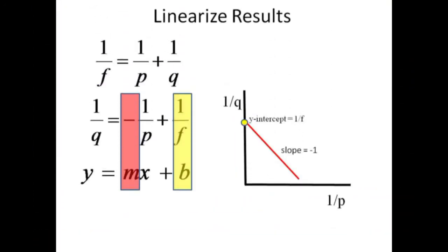If we rearrange the lens equation solving for the inverse of q in terms of the inverse of p and the inverse of f, this gives 1 over q equals minus 1 over p plus 1 over f. This represents a straight line when we consider 1 over q as y and 1 over p as x.